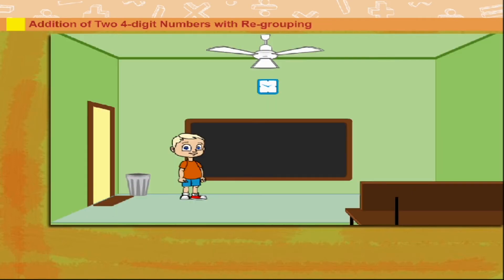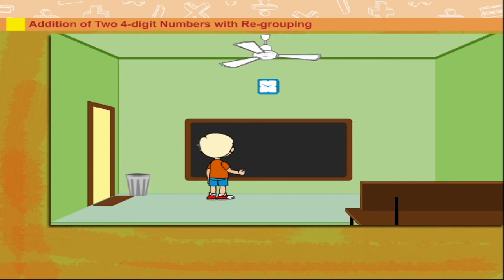Addition of Two Four-Digit Numbers With Regrouping. Beanie is in the class to explain addition with carryover.